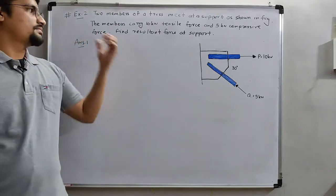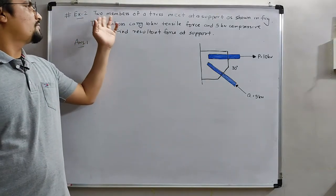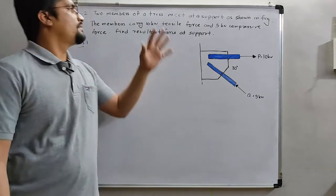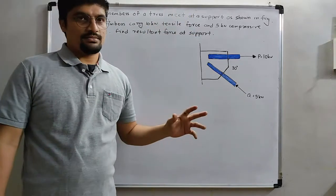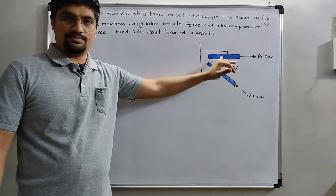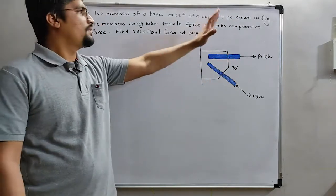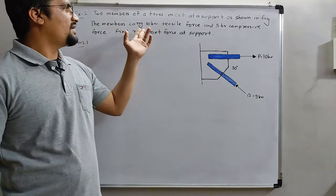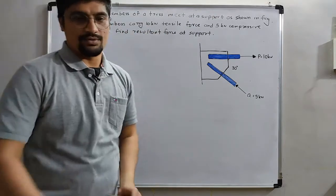In this second example, the data are like two members of a truss meet at support as shown in figure. There are two members meet at support. In figure, the members carry 10 kN tensile force.